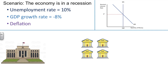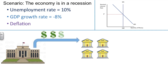One of the things that the Federal Reserve can do is engage in what is known as open market operations. Open market operations is characterized by an increase in the money supply where the Federal Reserve will inject money into the banking system.